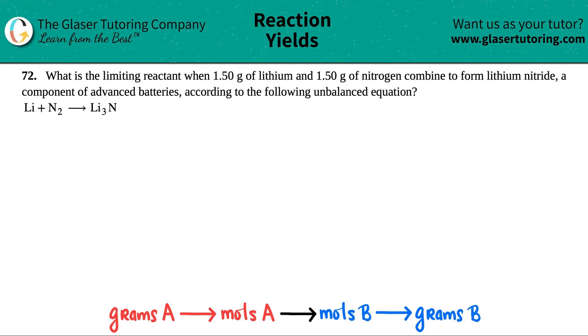Number 72, what is the limiting reactant when 1.50 grams of lithium and 1.50 grams of nitrogen combine to form lithium nitride, a component of advanced batteries, according to the following unbalanced equation? They give me the equation right here. I'm just going to write this out real big. So we have lithium plus nitrogen, which is N2, it's a diatomic, and that will give us Li3N.